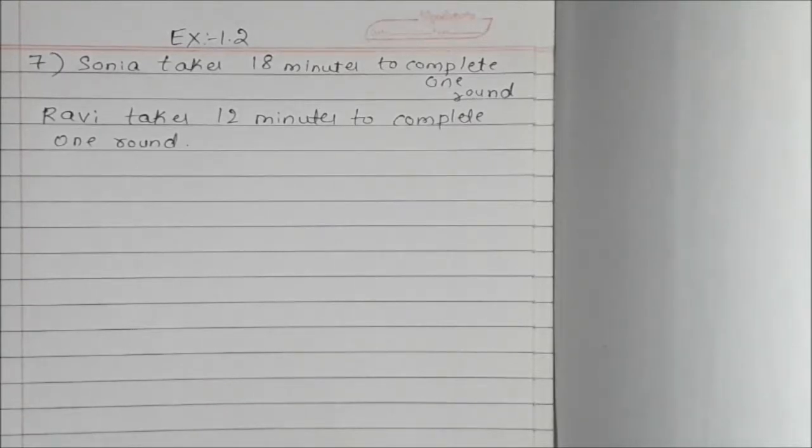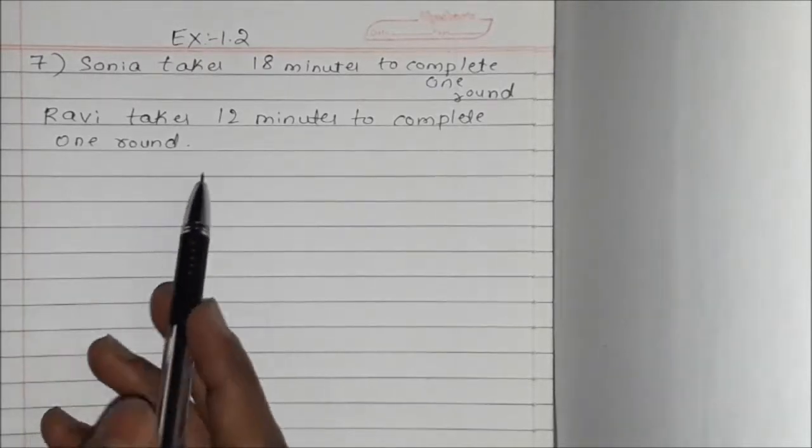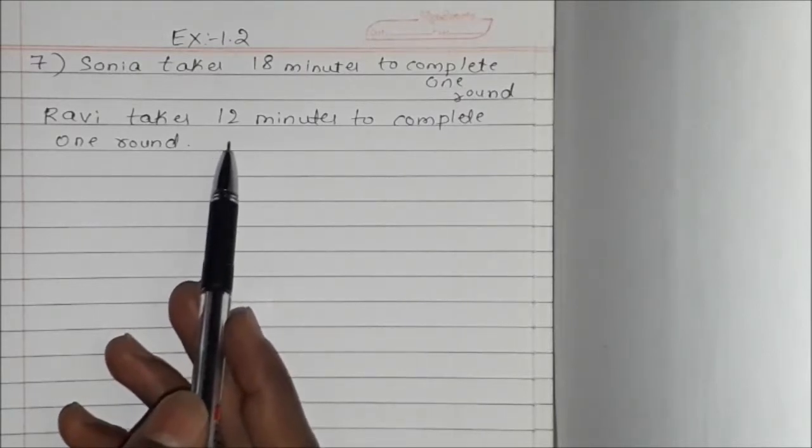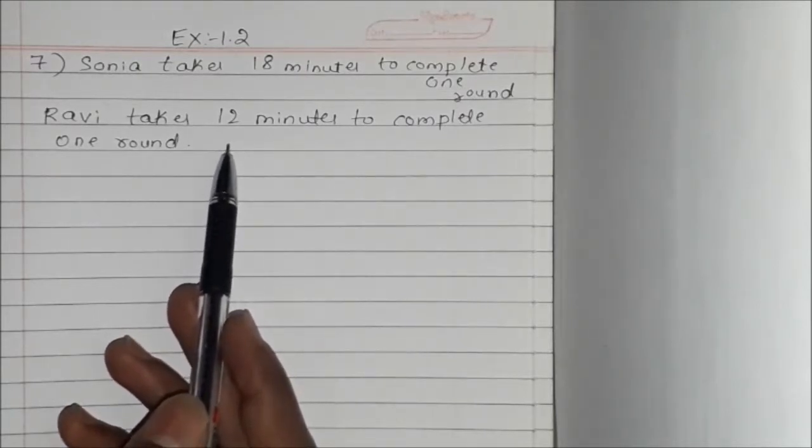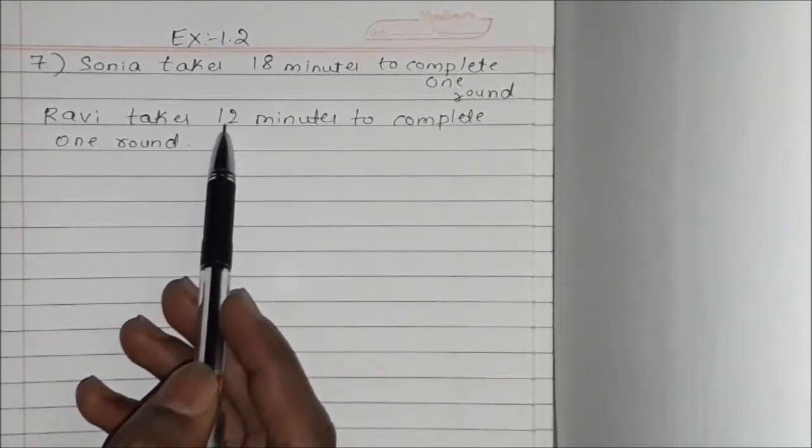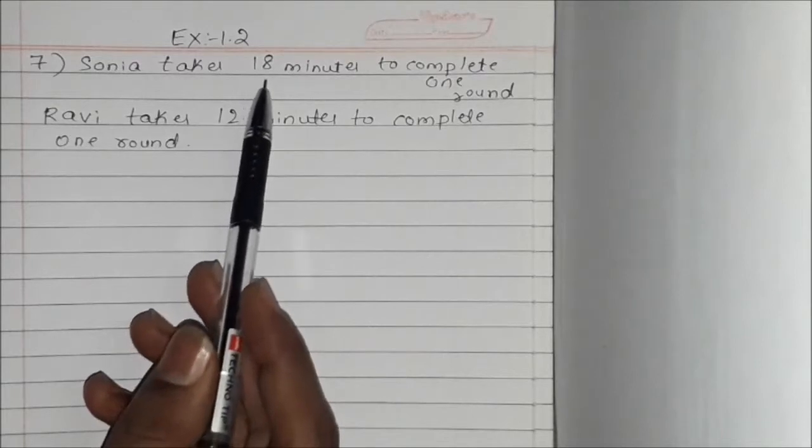So now they are asking if they both start at the same point and at the same time and go in the same direction, after how many minutes will they meet? They are asking if they leave at the same time, at the same place and in the same direction. Since Ravi takes 12 minutes and Sonia takes 18 minutes.